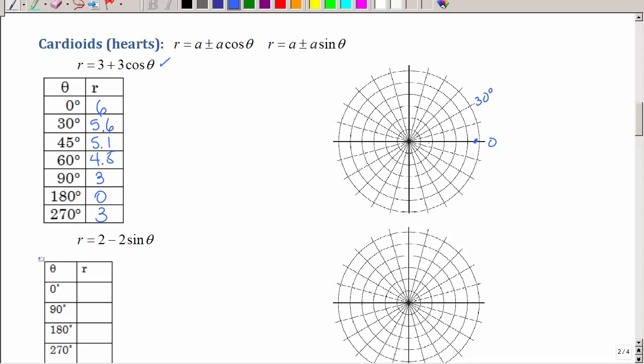Here's 30 degrees. 1, 2, 3, 4, 5. Let's see. 1, 2, 3, 4, 5, and a little bit more. So that must be 6 way out there. And then at 45 degrees, a little bit closer to 5. At 60 degrees, a little bit less than 5. And then finally at 90, we're at 3.